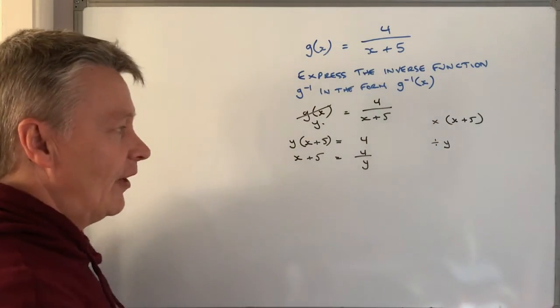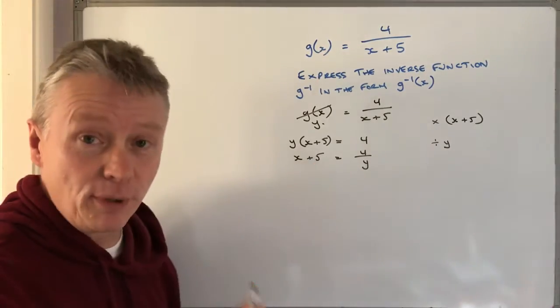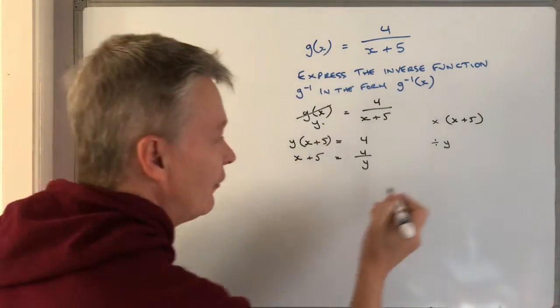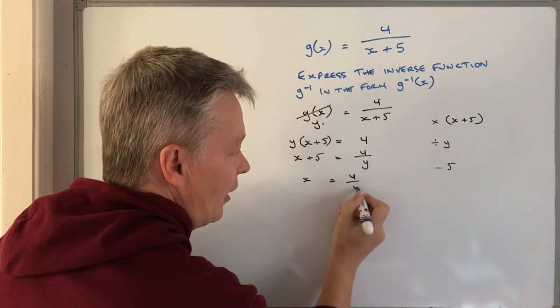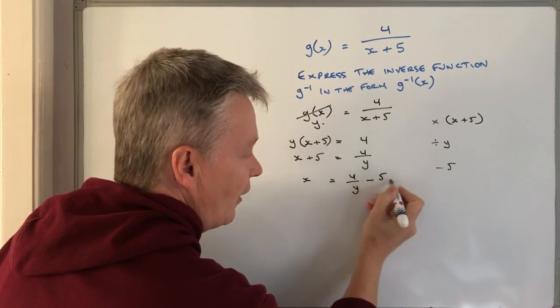Finally, it's a case of getting rid of the +5 by subtracting 5 from both sides. So I end up with x = 4/y - 5.